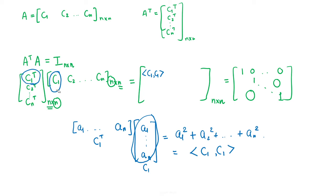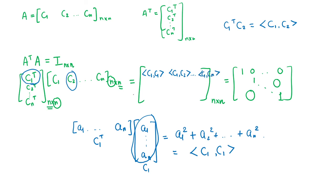The second element in row 1 is the inner product ⟨C1, C2⟩, and continuing, the last entry in row 1 is ⟨C1, Cn⟩. Similarly, in row 2 we get ⟨C2, C1⟩, ⟨C2, C2⟩, ..., ⟨C2, Cn⟩. The last entry of the entire matrix is ⟨Cn, Cn⟩. So the full product A transpose times A can be written as the matrix whose (i, j) entry is the inner product ⟨Ci, Cj⟩.